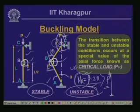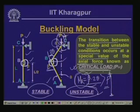The transition between stable and unstable conditions occurs at a special value of the axial force termed the critical load. Beyond the critical load, adding a little additional load makes the system unstable, failing by excessive unrestrained deformation called buckling. The member will no longer be in a stable state — that limiting value of load beyond which the member fails is the critical load.